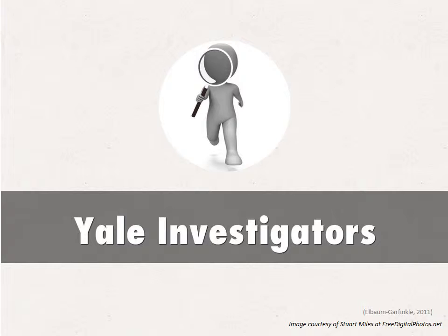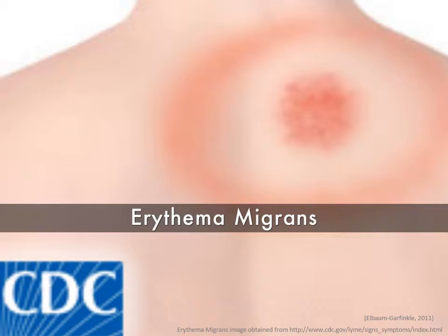Yale sent investigators to the area to see if they could determine the cause. While interviewing the patients, the investigators found something interesting: in 25% of those affected, a bullseye rash, erythema, and migraines had preceded the arthritis.